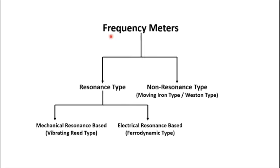By measuring the frequency or observing the trend in frequency, we can come to know the order of load coming into the system. With a very high amount of load coming into the system, there is a significant drop in voltage and frequency. When there is a sudden throw-off in load, there is a huge swell in voltage and frequency. Observing frequency tells us how the system is responding to various loads, making frequency measurement very important when using an alternating source.